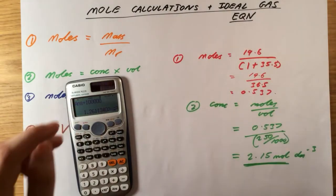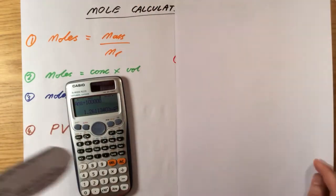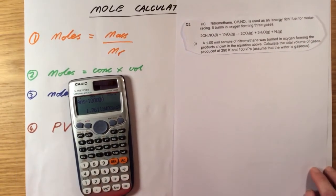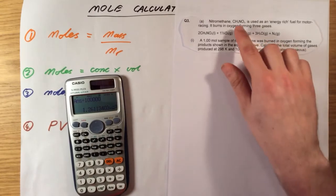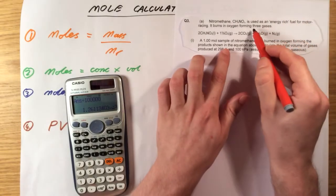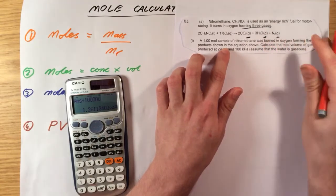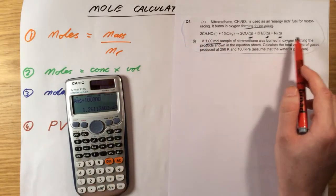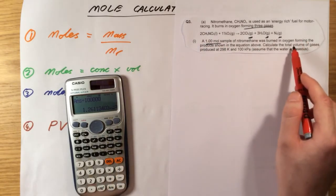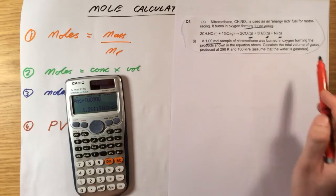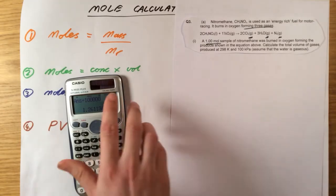Final question, then. I quite like this question. It's got a trick in which is quite difficult to spot. It says, Nitro-methane is used as an energy-rich fuel for motor racing. It burns in oxygen, forming three gases. It's really nice it's told you that. Let's remember that there are all gases there. A one mole sample of nitro-methane was burned in oxygen, forming the product shown in the equation above. Calculate the total volume of gases produced at 298 Kelvin and 100 kilopascals. Assume that water is gaseous.